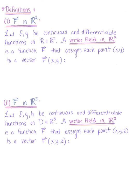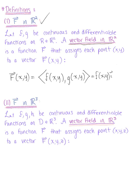Here we introduce the definitions in R² and R³. For our first definition, capital vector F in R², we let f and g be continuous and differentiable functions on a region R in the plane. A vector field in R² is a function, capital vector F, that assigns each point (x,y) to a vector F(x,y). We write this as F(x,y) = ⟨f(x,y), g(x,y)⟩, a multivariable vector-valued function. We can also write this in standard form as f(x,y)î + g(x,y)ĵ.